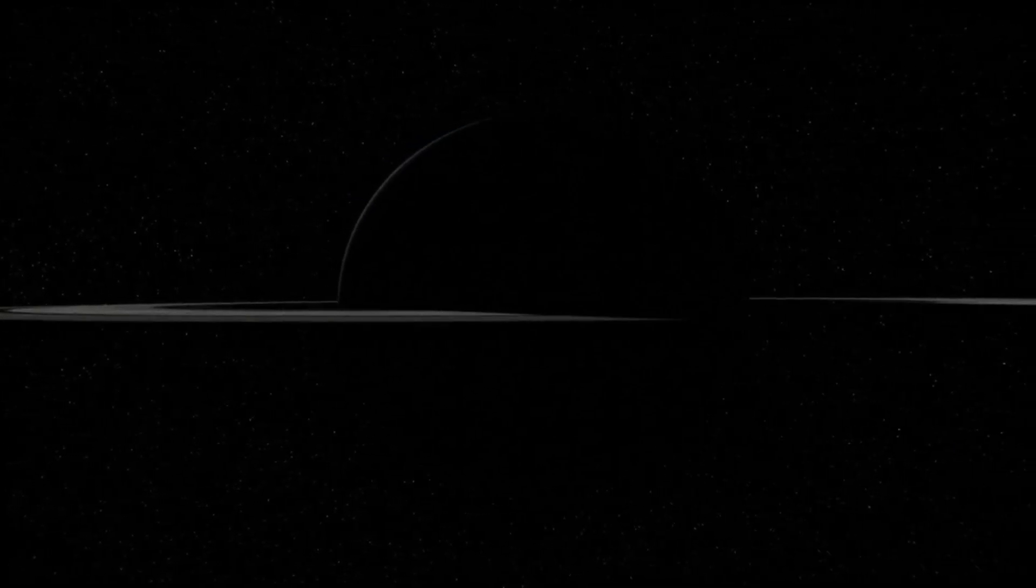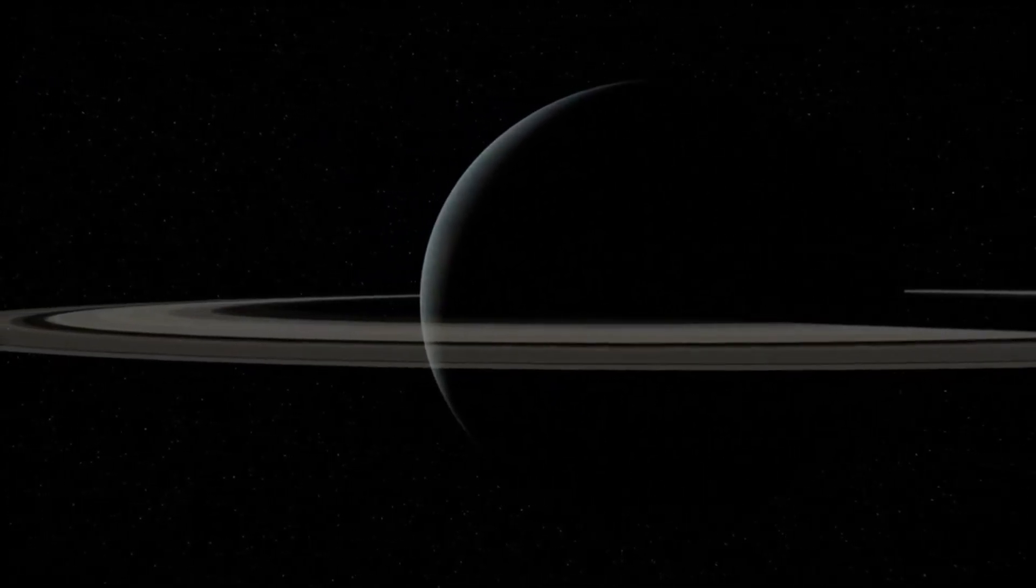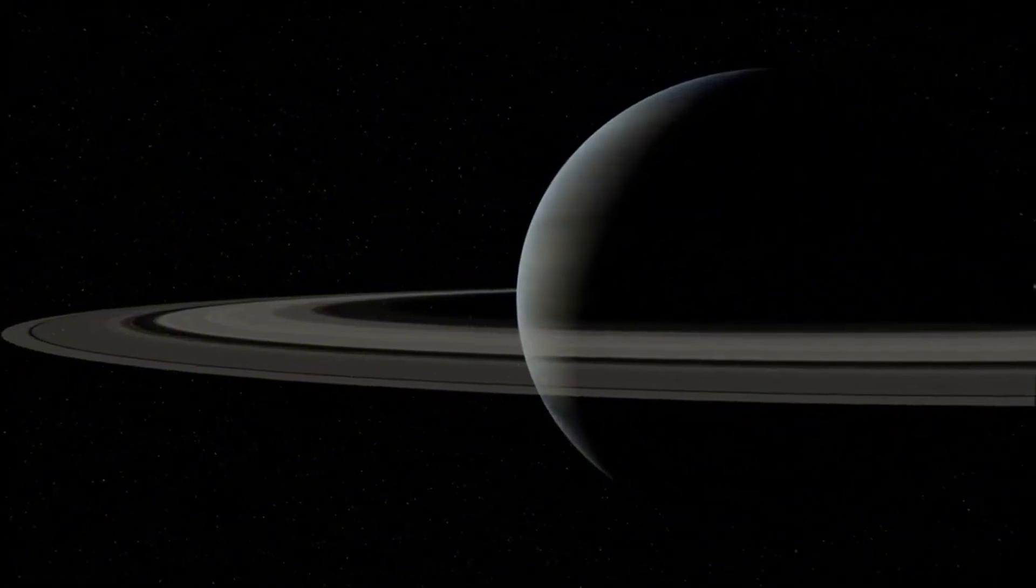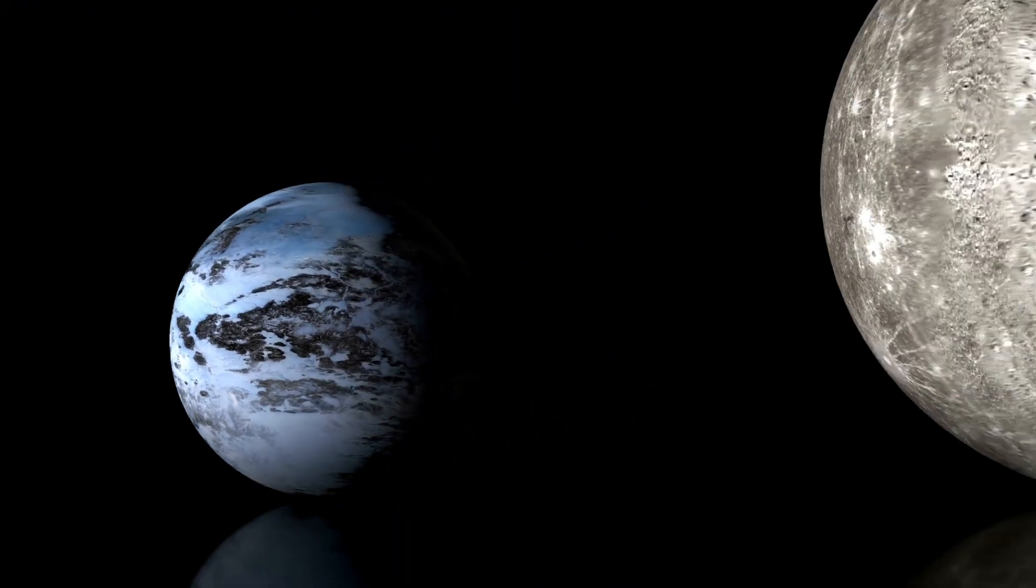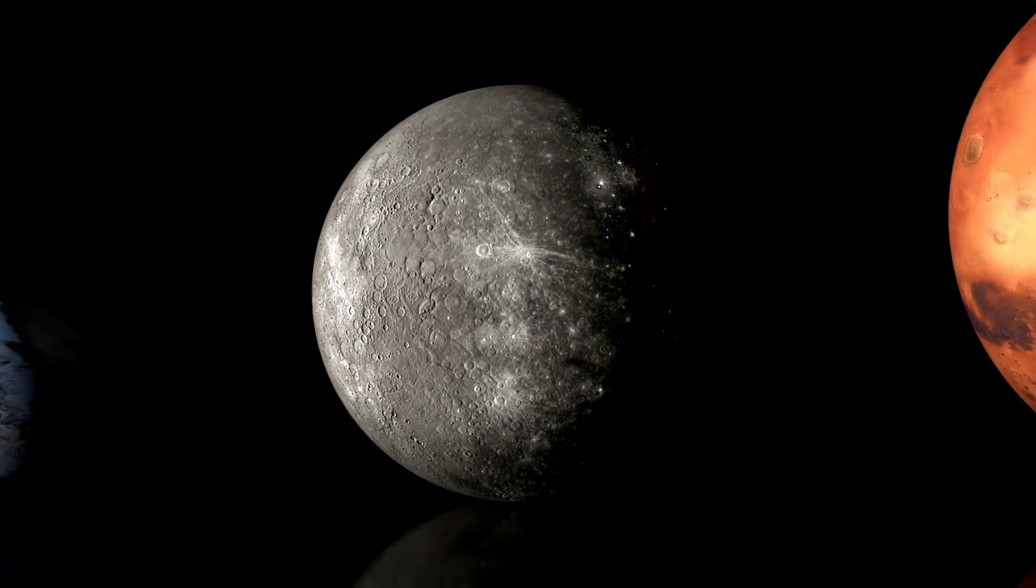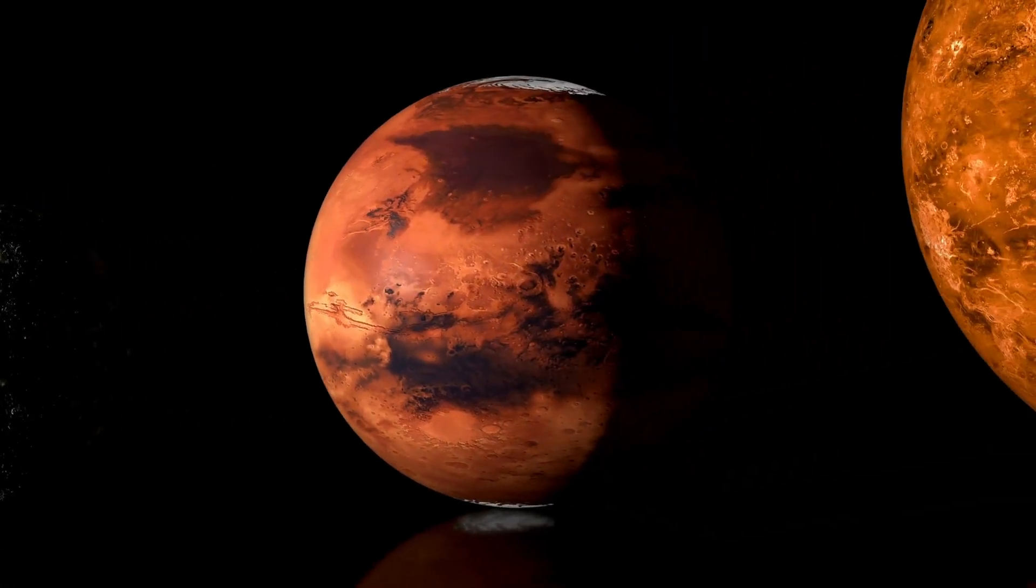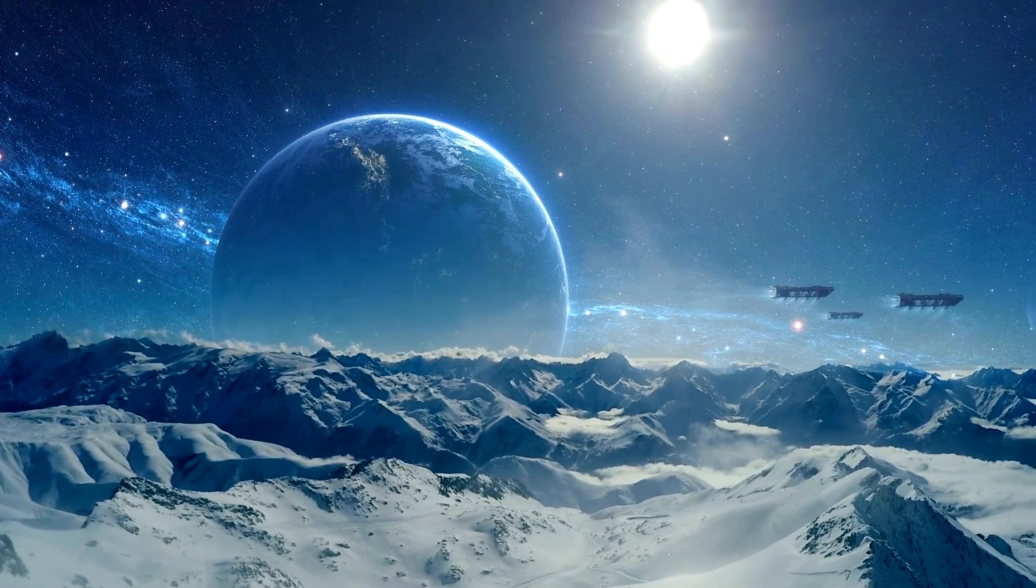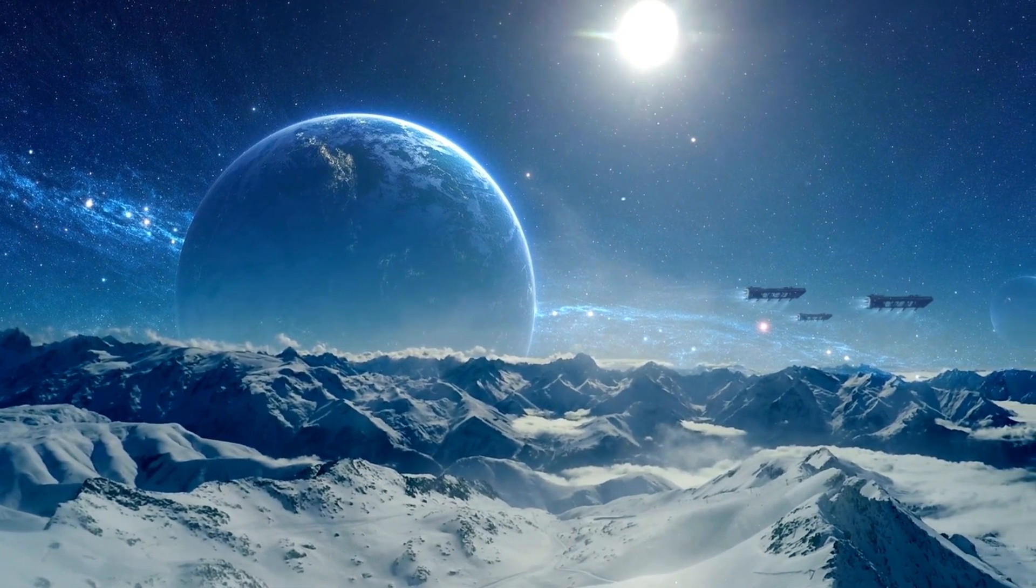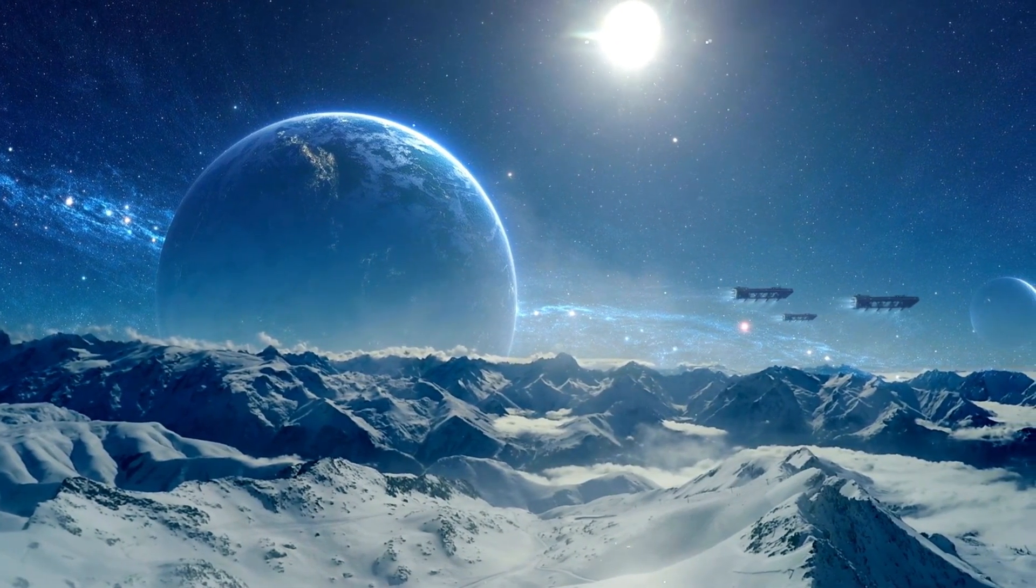The challenges posed by Proxima b's environment are significant. Its host star, Proxima Centauri, is a red dwarf known for its intense solar flares, which can emit bursts of X-rays and ultraviolet radiation. These flares could strip away the planet's atmosphere over time, exposing its surface to the harshness of space. If Proxima b retains any atmosphere, it likely requires a strong magnetic field to shield it from radiation. Without such protection, the surface environment would be hostile to life as we know it.